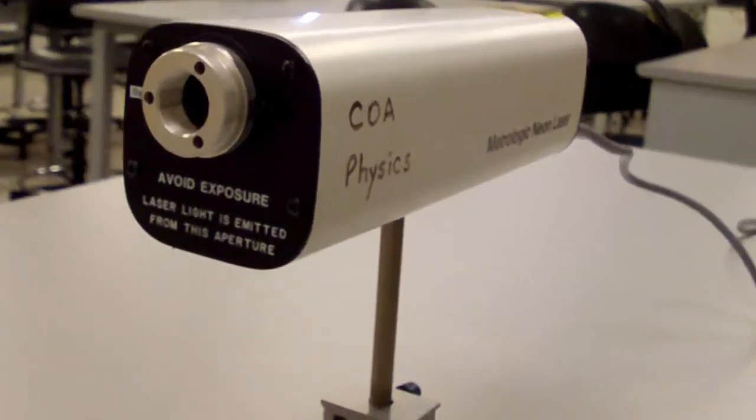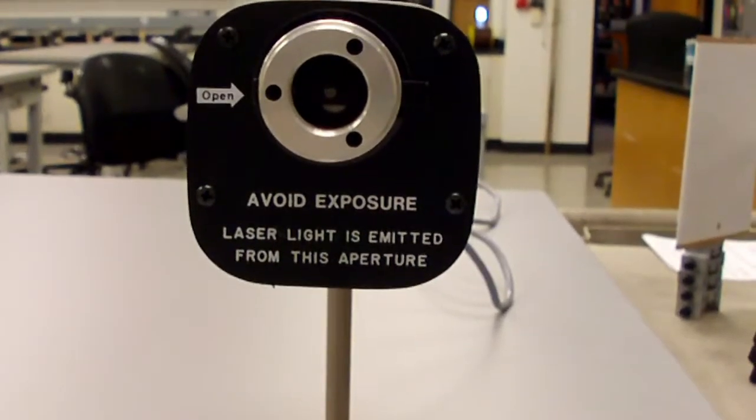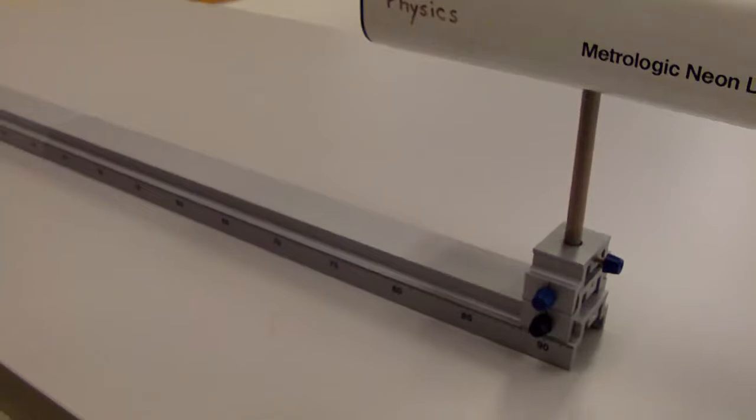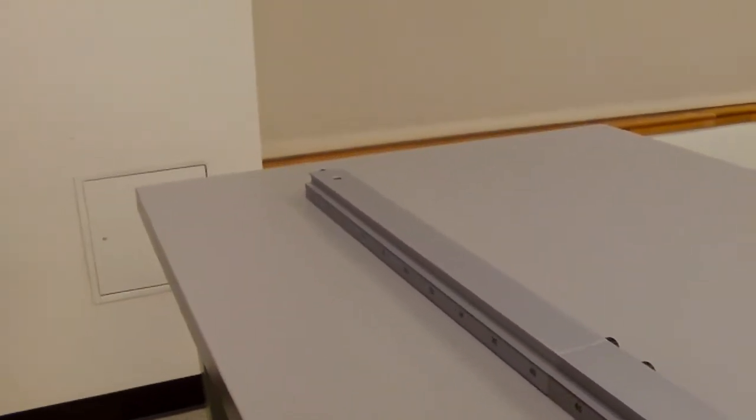This is our light source, Helium Neon laser. It emits a collimated red visible light. And this is the optical track for aligning optical elements.